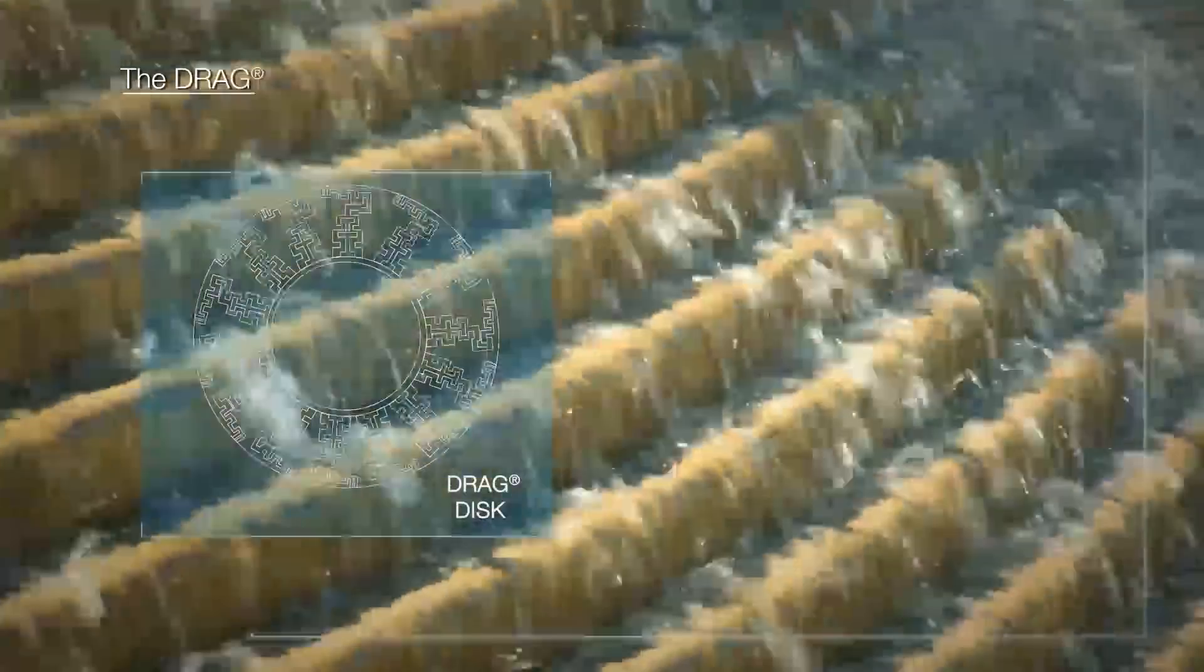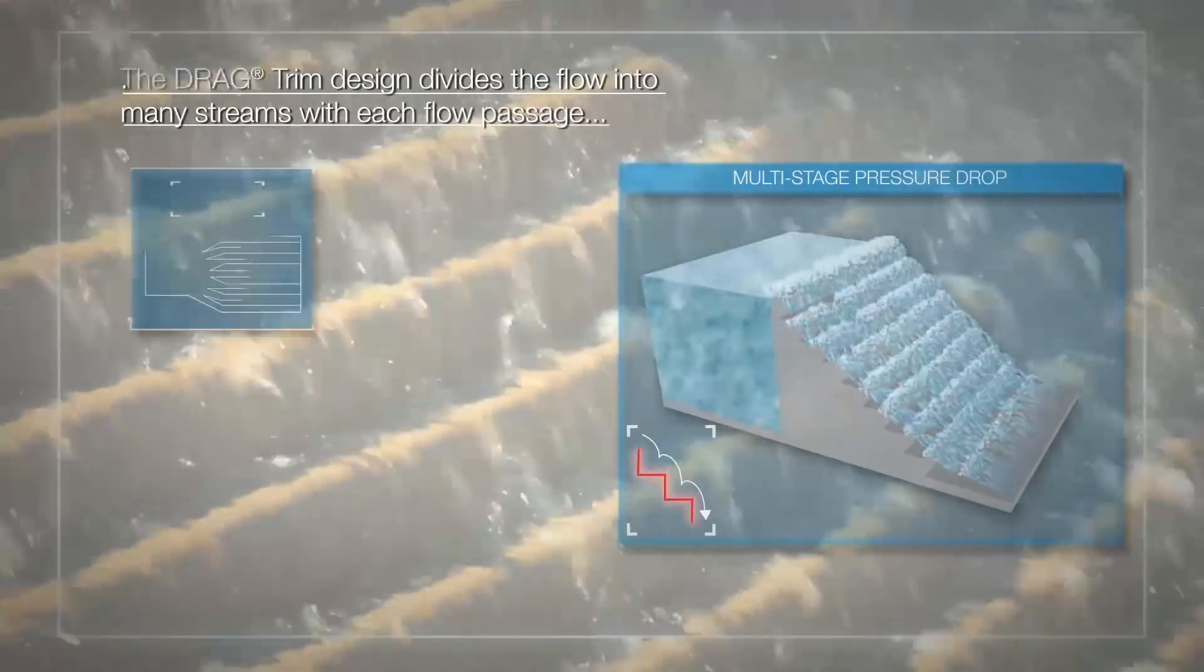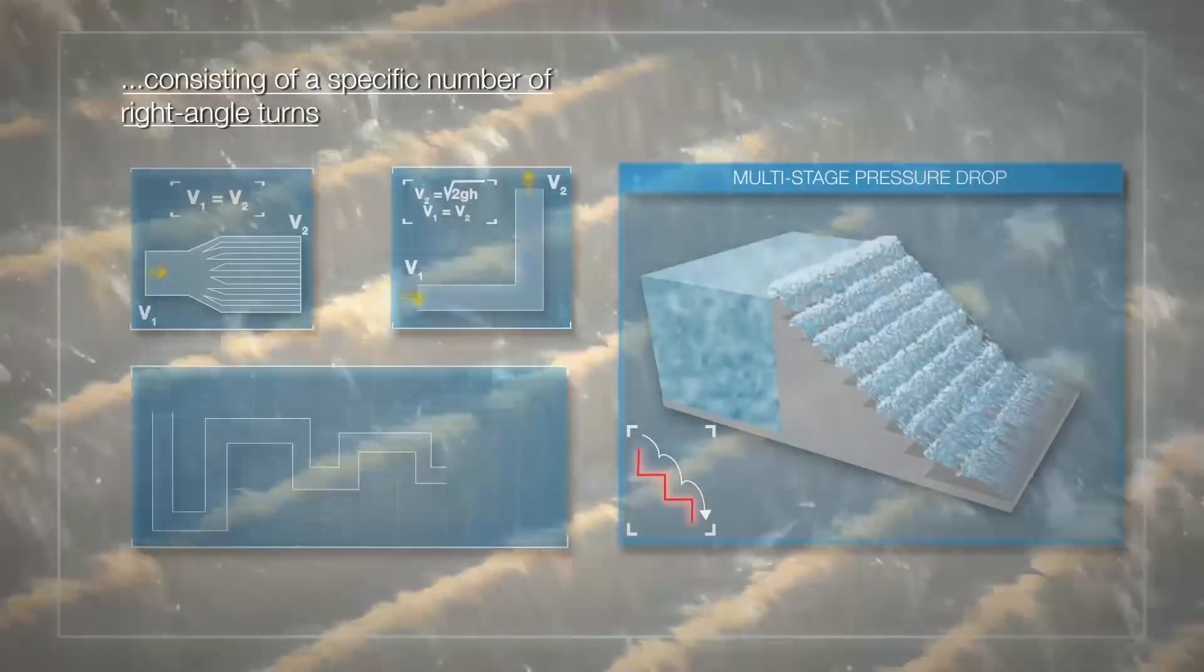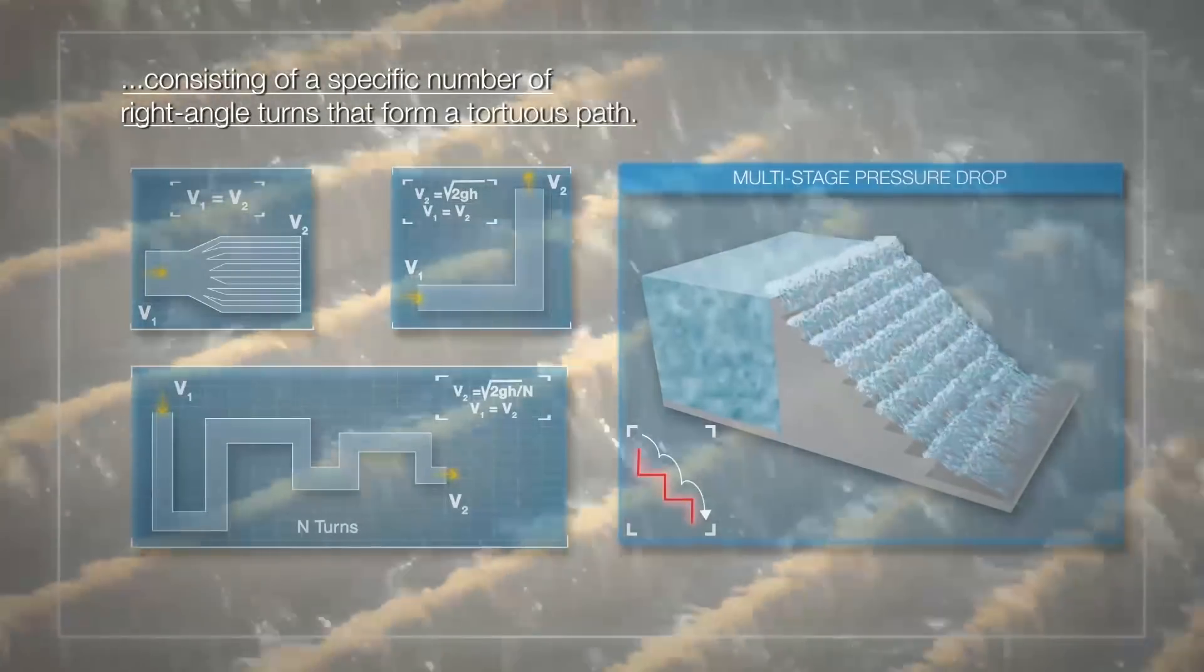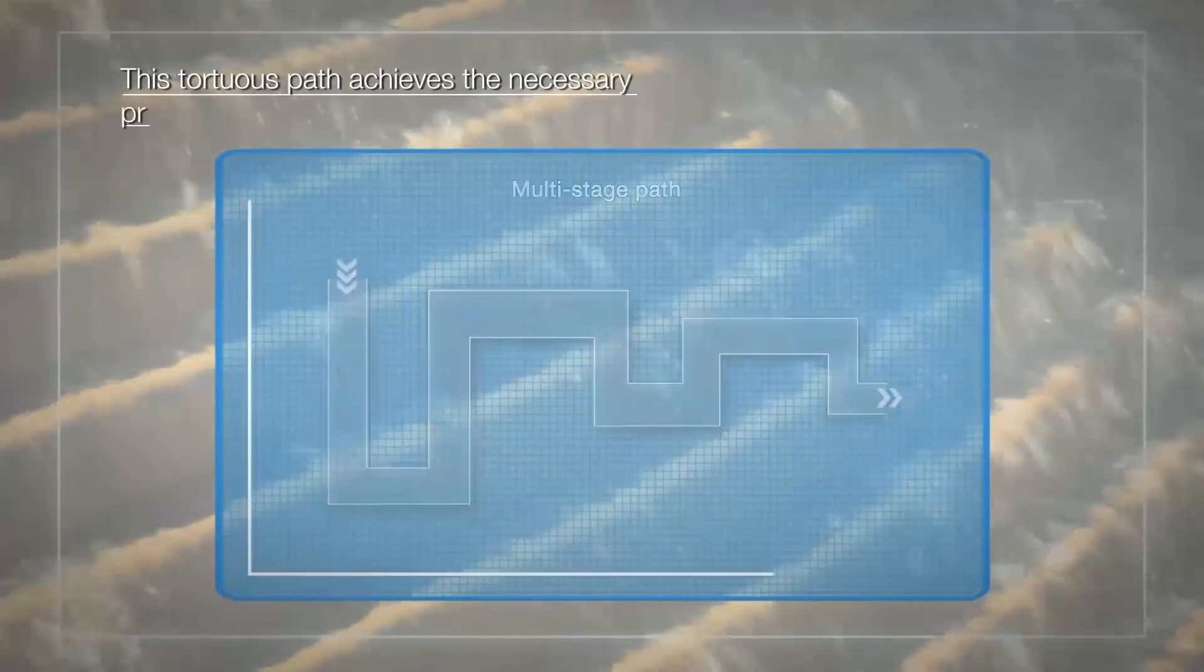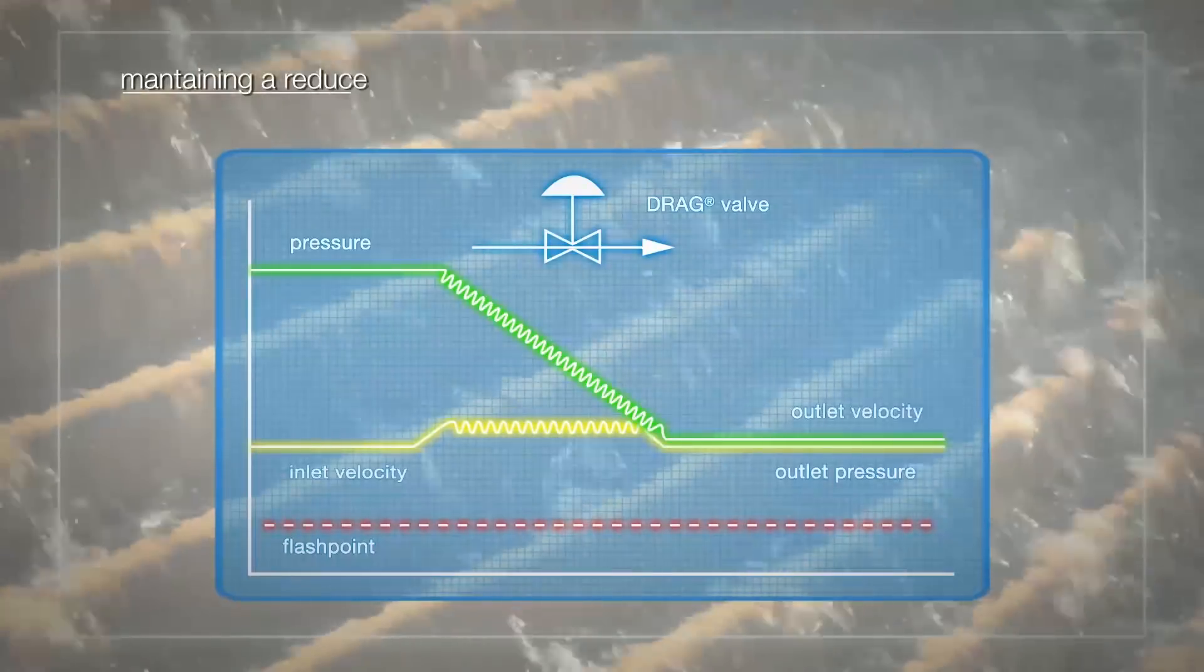The drag trim design divides the flow into many streams, with each flow passage consisting of a specific number of right-angled turns that form a tortuous path. This tortuous path achieves the necessary pressure reduction while at the same time maintaining a reduced fluid velocity.